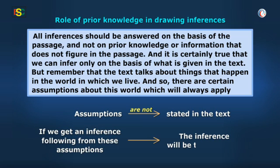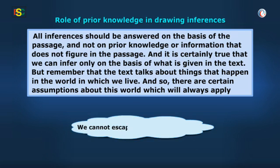But if we get an inference following from these assumptions, the inference will be the right one. It will be the right one in spite of the fact that it is based on something that is not directly stated in the text. We cannot escape empirical knowledge. Let me give you another example.